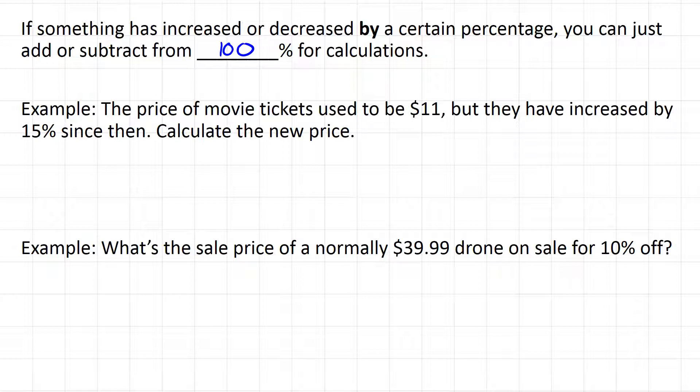The price of a movie ticket used to be $11, but the ticket price has increased by 15%. So there's that keyword, by 15%. What that means is it's 100 plus 15 or 115% of the original price.